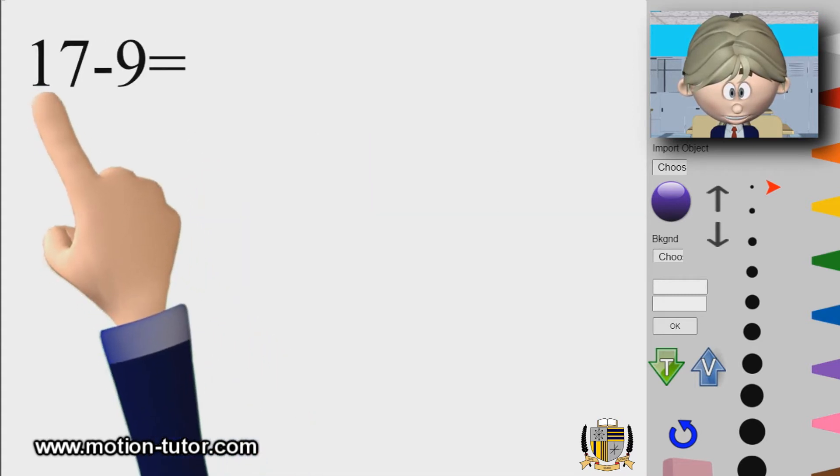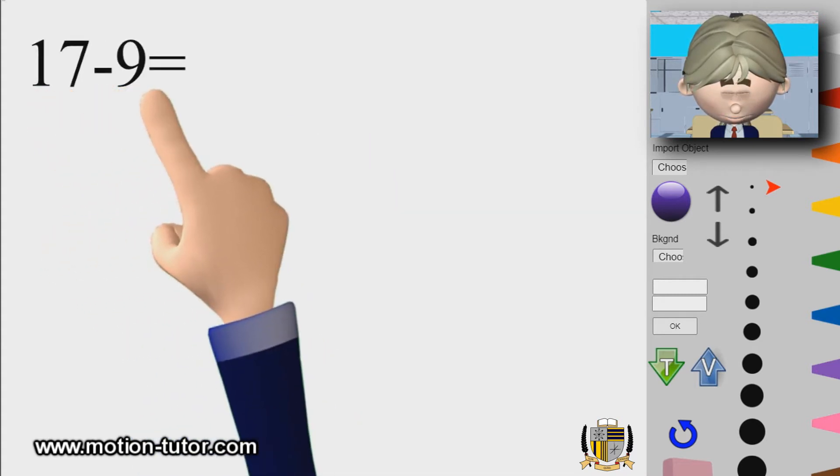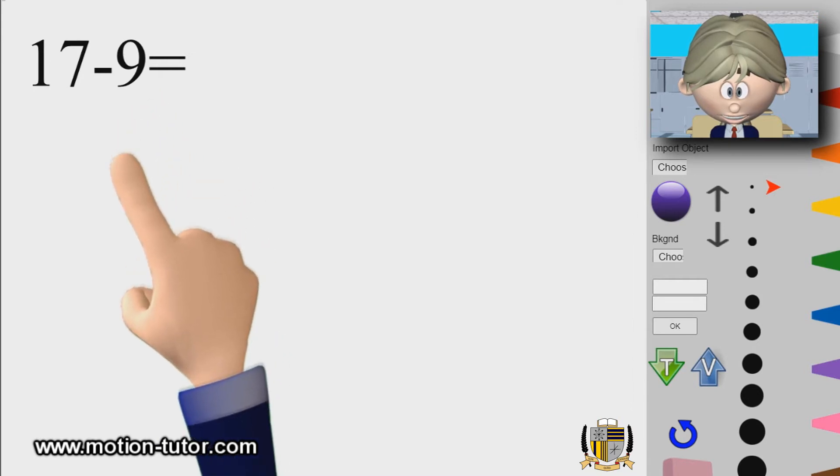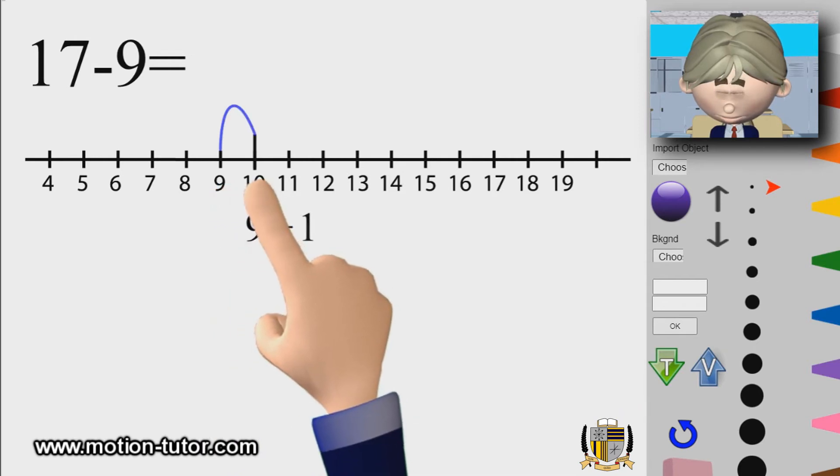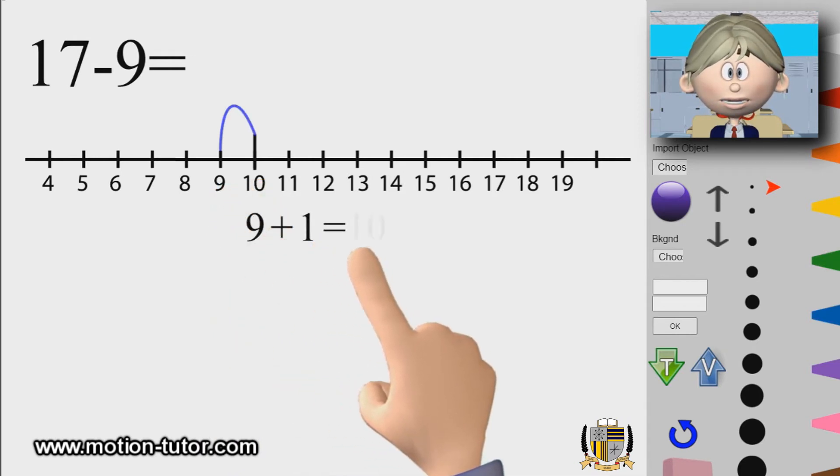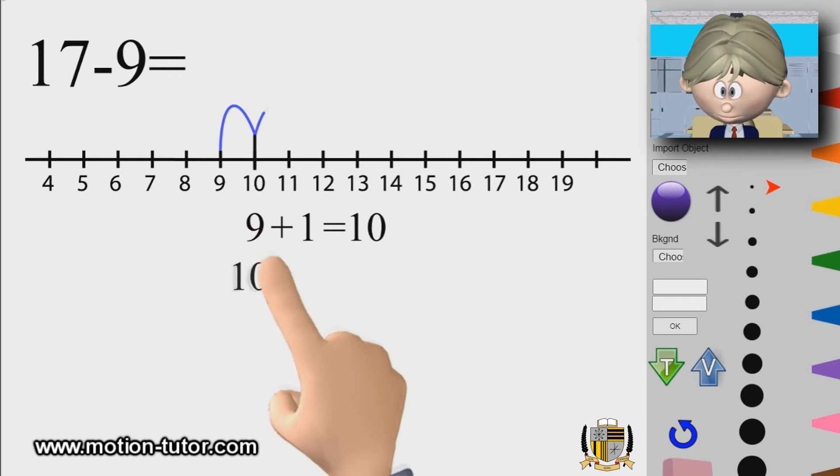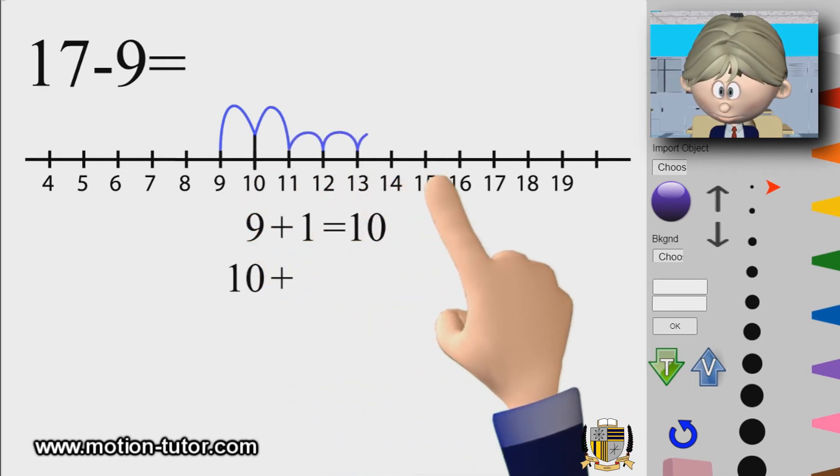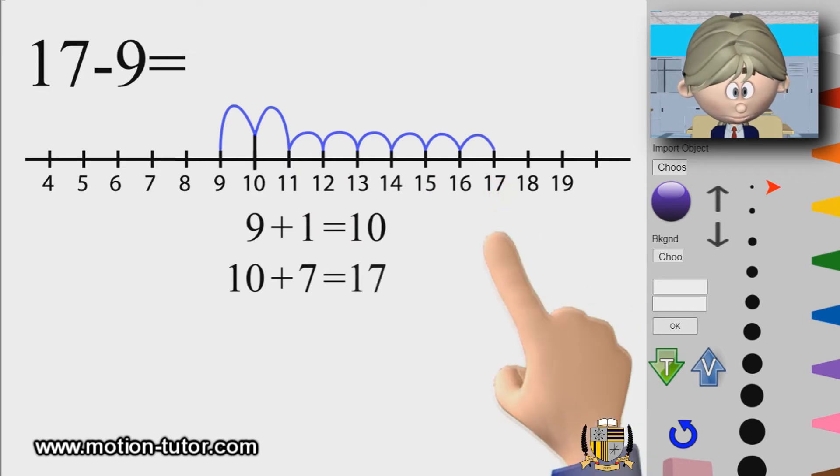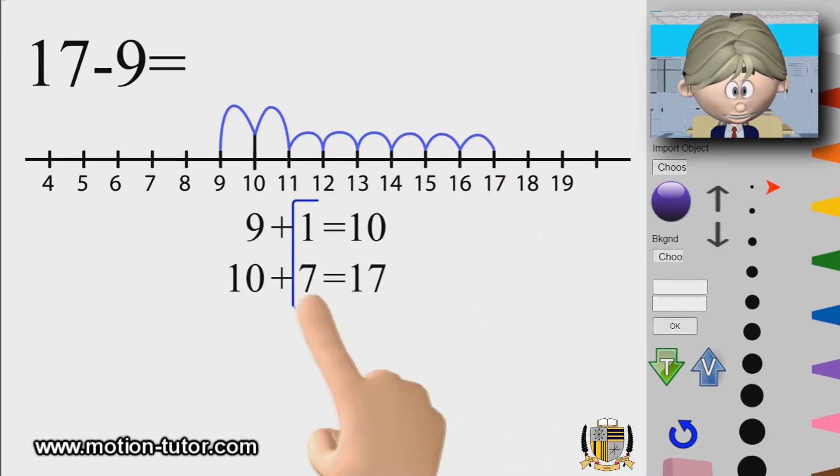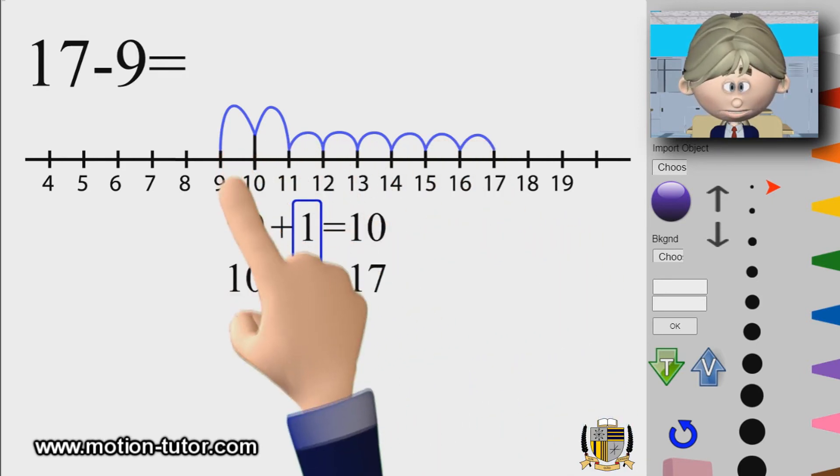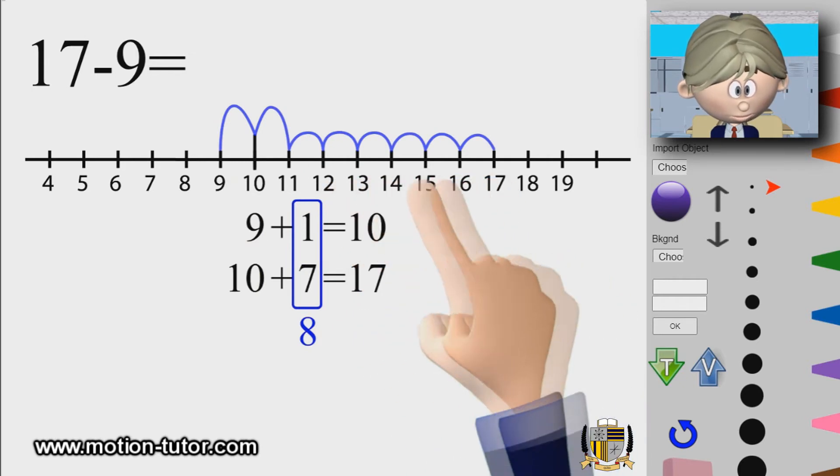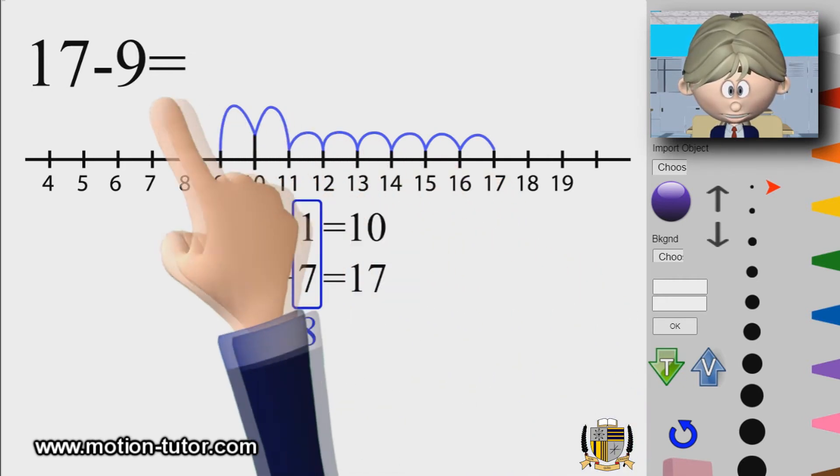Here's a 17 minus 9. Well we can just think about it and start at 9. Then I know I need one more to get to 10, and then I know I need 7 more to get to 17. That 1 and 7 is a difference. That 1 and 7 together is 8. So I know 8 is the difference between 17 and 9. So that means 17 minus 9 is 8.